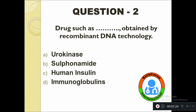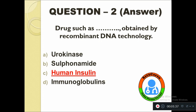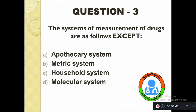Question number two: Drugs such as those obtained by recombinant DNA technology — option A: Urokinase, B: Sulfonamide, C: Human Insulin, D: Immunoglobulins. The right answer is Human Insulin.